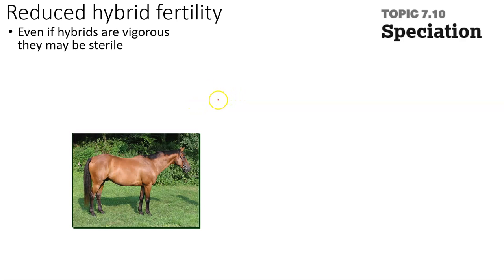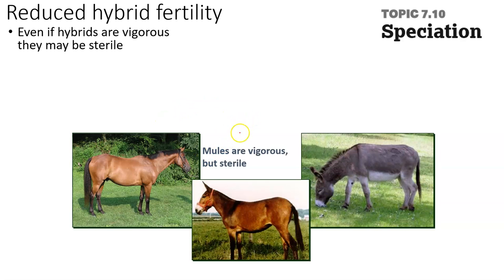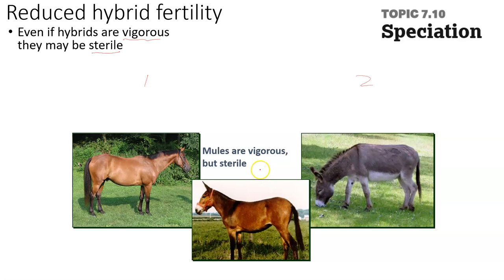Let's look at another one: reduced hybrid fertility. Sometimes you have hybrids, such as is the case between the horse and the donkey, which make the mule, that are vigorous — they are not frail. Mules are actually very strong, but they are sterile, meaning that mules cannot have children. So species one and species two can have children, but this barrier occurs after that zygote forms, because after this mule, you don't have any more in this population — so these are two different species.